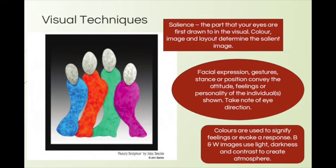We've got no facial expression in this image, but we do have gestures and body position. You can see them all leaning in towards the centre — it's nearly as though this is mum and dad and the two kids all gathering in for a hug. That conveys the attitude, feelings, and personality of the individuals shown. If there is a face, always look at eye direction. In early Australian paintings especially, the direction of somebody's eyes is telling you something — maybe they're looking off into the distance at a dog, and that tells you something of the story.